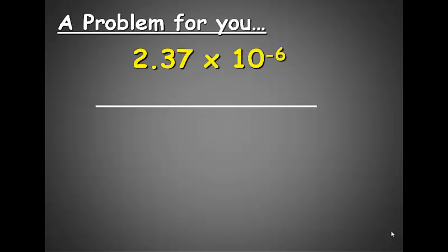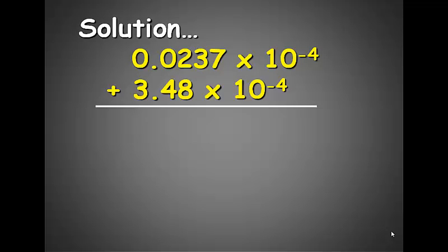Here's a problem for you: 2.37 times 10 to the negative 6th plus 3.48 times 10 to the negative 4th. Remember, we want to move or change the exponent on the smaller number. Because our exponents are negative, the smaller number is the 2.37 times 10 to the negative 6th. I want to add 2 numbers to that exponent in order to get it in the same format as 10 to the negative 4th. Therefore, I need to move my decimal point to the left 2 spaces. Now our exponents are the same, and I can add our numbers together. 3.5037 times 10 to the negative 4th.